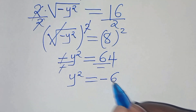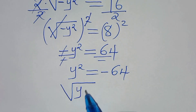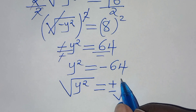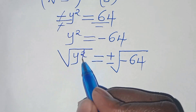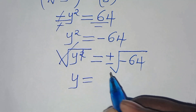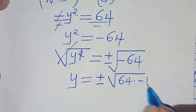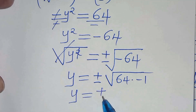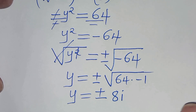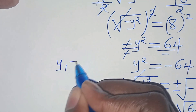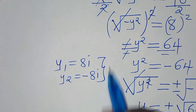We now have y² equals minus 64. To solve for y, we introduce a square root on both sides: square root of y² equals plus or minus the square root of minus 64. We can express minus 64 as 64 times minus 1, so y equals plus or minus the square root of 64 times the square root of minus 1, which is plus or minus 8i. This gives two solutions: y₁ = 8i and y₂ = minus 8i.